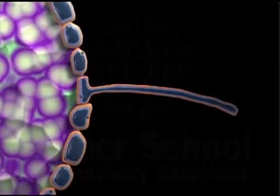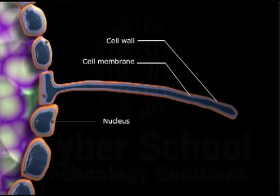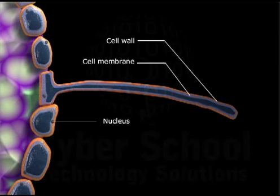Root performs the functions of fixation, absorption and conduction. The root system consists of the primary root, the secondary root and the tertiary root.